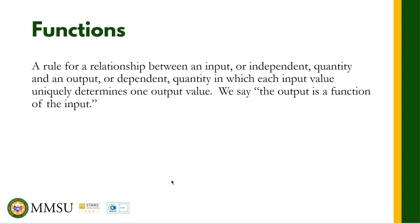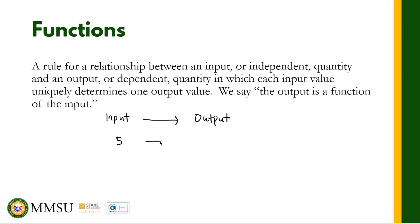We say the output is a function of the input. So basically, dito pinag-usapan natin yung input and output. So meron tayong input, and may nangyayari sa input na yan to come up with the output value. The function is the relationship between these two values. For example, kapag ang input natin ay 5, ang lumabas ay 10; kapag 6, lumabas ay 11; kapag 7, ang lumabas ay 12. So we have here an input-output relationship.